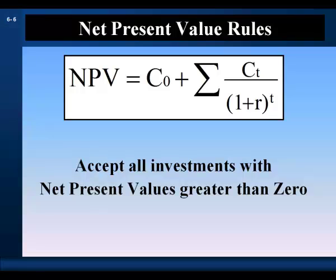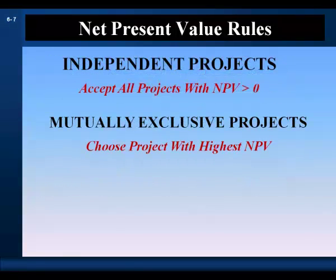The Net Present Value Decision Rule is to accept all investments with net present values greater than zero. When evaluating independent projects for an accept-reject decision, the NPV rule is to accept all projects with net present values greater than zero. When evaluating mutually exclusive projects, the projects are ranked by their net present value. The NPV rule is to choose the project with the highest net present value — that is, the project with the biggest positive impact on wealth.